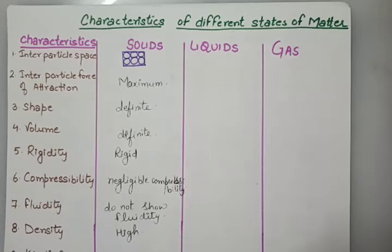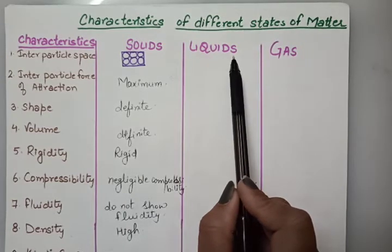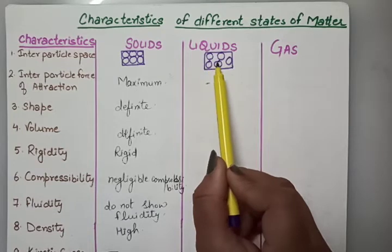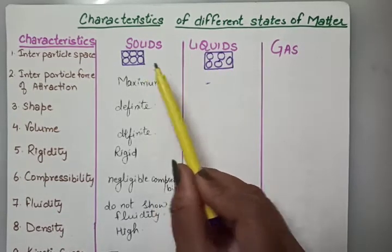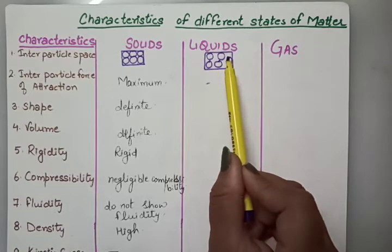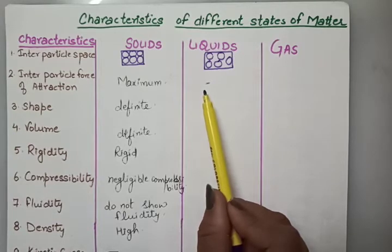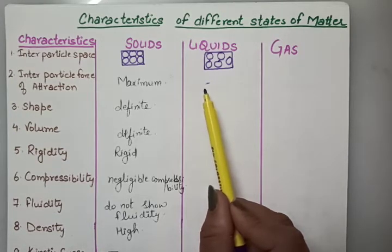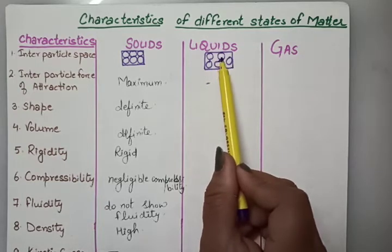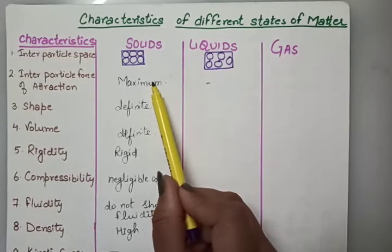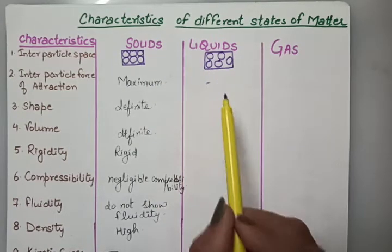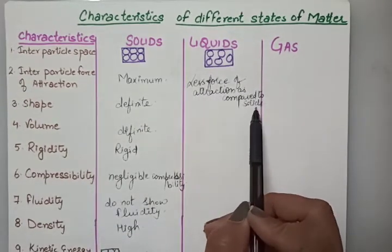Now let's start with the liquids. If we look at the magnified image of a liquid, the particles are not so tightly packed as compared to solid — they are loosely packed, having spaces between the particles. The next is inter-particle force of attraction. The particles are a little apart from each other, so the forces of attraction are less than that of solids. Liquids have less force of attraction as compared to solids.